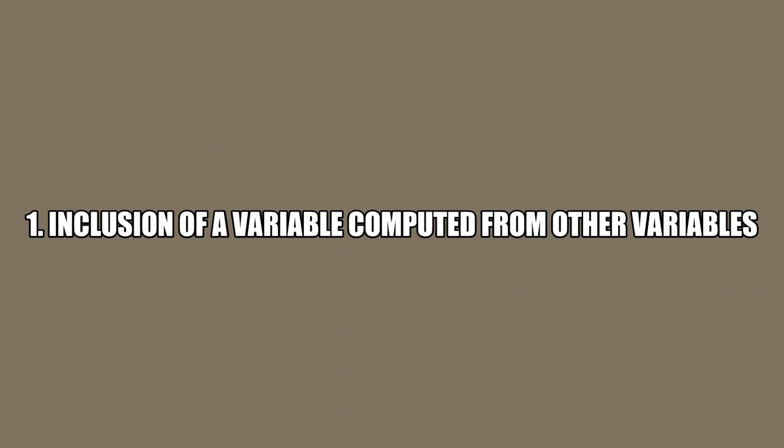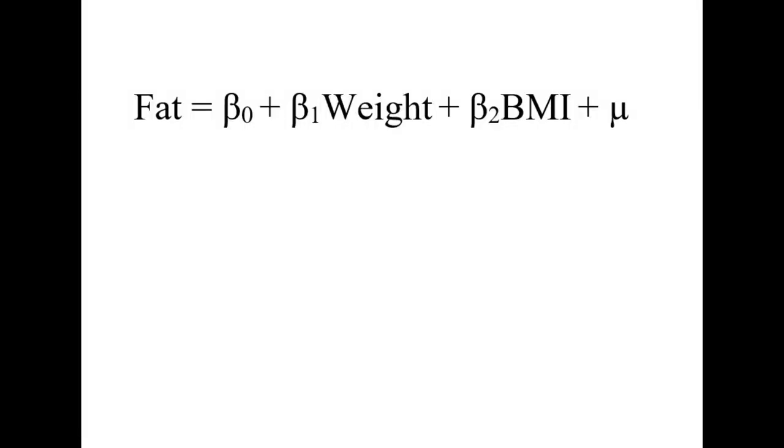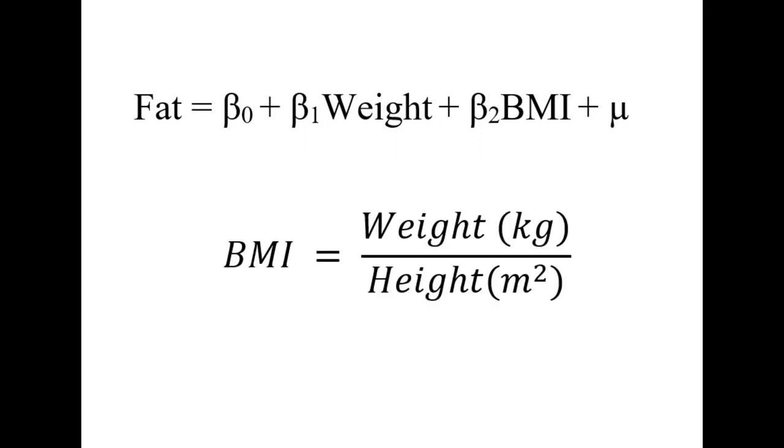The first reason is inclusion of a variable which is computed from other variables in the data set. For example, consider this regression equation. The model will have correlation between the explanatory variables weight and BMI because BMI is calculated using the variable weight.